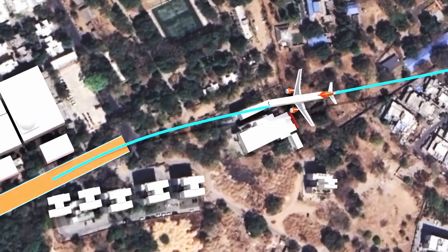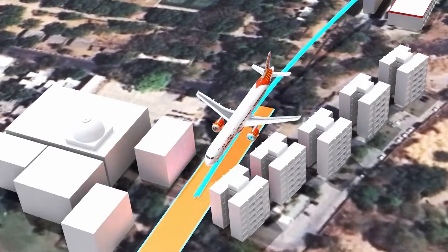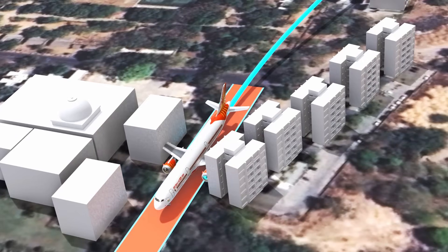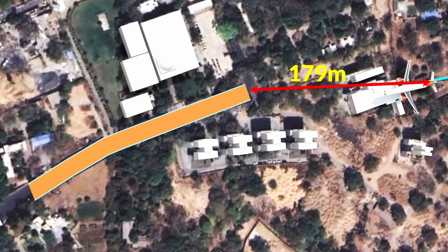What if the captain were able to land the airplane on the highway? Not safe, but better than option one. Unfortunately, on June 12, the captain couldn't achieve it. Now comes the biggest question.